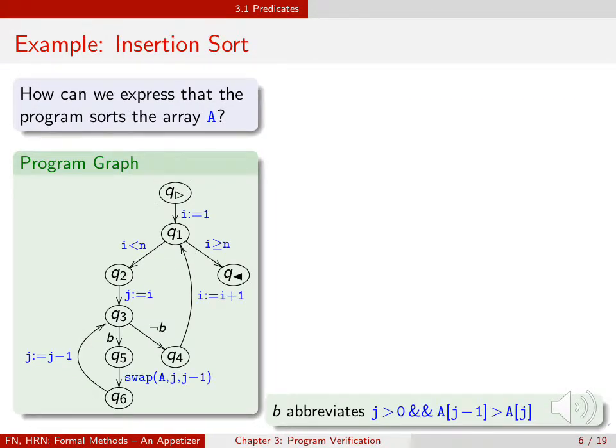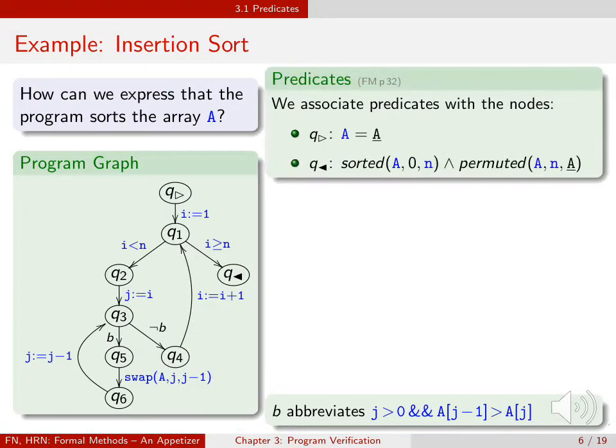Let us look at a more complex example, namely that of insertion sort. The predicate at the initial node simply gives us another name for the original array A. The predicate at the final node then says that the array has been sorted and is a permuted version of the original array.